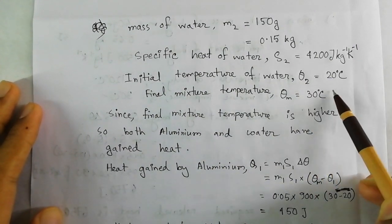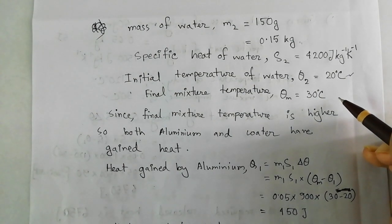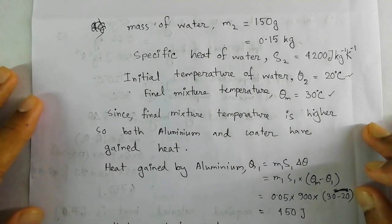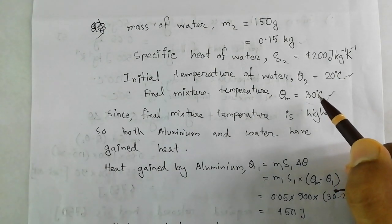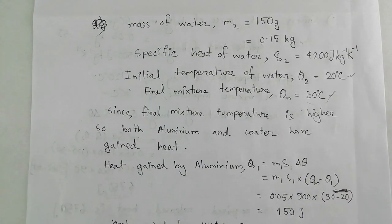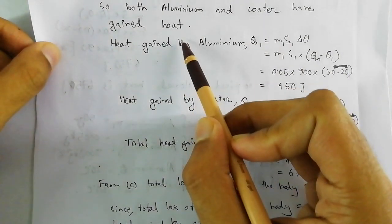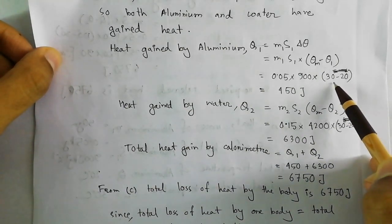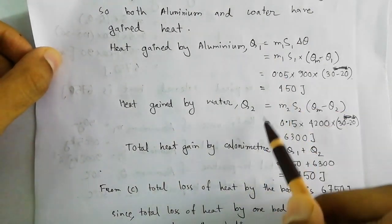The initial temperature of water was 20 degrees Celsius and the final temperature is 30 degrees Celsius, since this is an equilibrium mixture. The final temperature is higher than the initial temperature for both aluminium and water, meaning both gained heat. We calculate the heat gained individually by aluminium and by water using Q = ms·ΔΘ, always placing the greater temperature value first to get a positive result. Q1 and Q2 represent the heat gained by each.